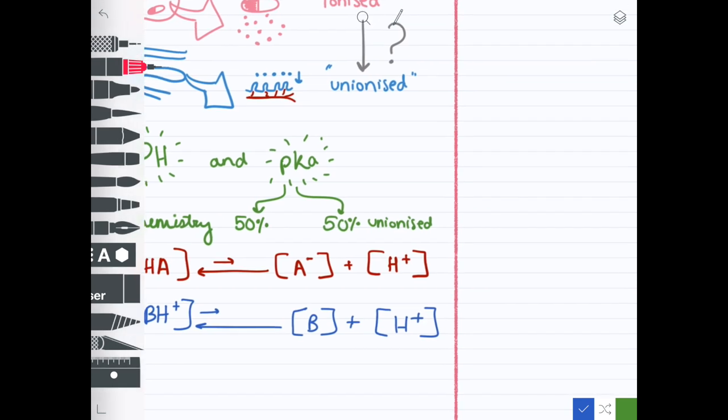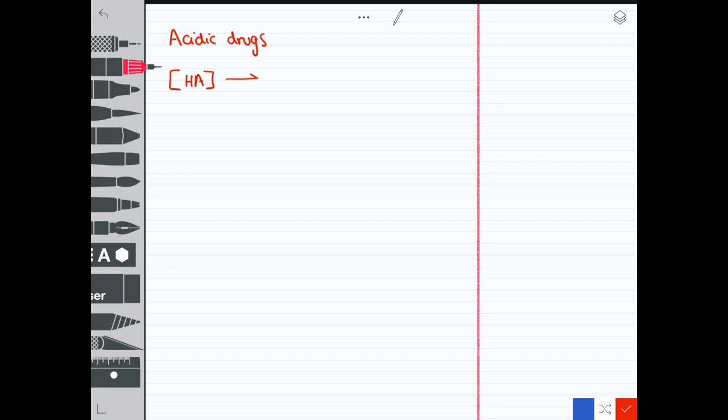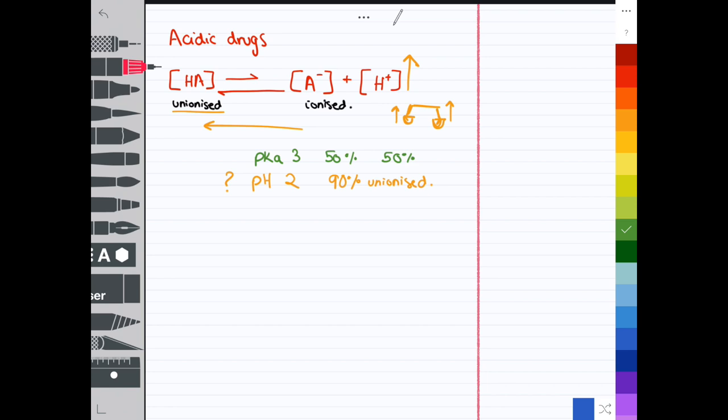Let's take an example for an acidic drug. Say we have a drug with a pKa of 3. Remember, the pKa is the pH where 50% is ionized and 50% is unionized. In this equilibrium equation, the left side is unionized and the right side is ionized. What happens if we take this drug and put it in a low pH of 2? This low pH has an increase of hydrogen ions, increasing the right side of the equation. This is an equilibrium equation, so if you increase one side, the other side compensates. It shifts the reaction to the left and you get the unionized part. So 90% of the drug is unionized and 10% is ionized.